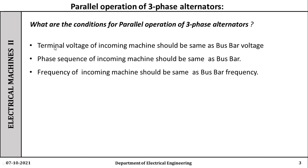How to achieve the first condition? You can measure what is the terminal voltage of the bus bar and what is the terminal voltage of the alternator when it is running. For frequency, you can measure the speed using frequency meters. For phase sequence, you have to connect the incoming machine to the bus bar with the proper, same phase sequence. Otherwise, there will be a chance of a dead short circuit if there is a wrong connection.